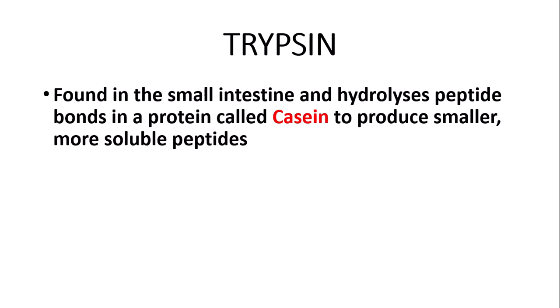First I'm going to give you some background on what trypsin is. Trypsin is an enzyme found in the small intestine, and it hydrolyzes peptide bonds in a protein called casein to produce smaller, more soluble peptides. Casein is a protein found in milk. From this information you will probably have already worked out that trypsin is a protease.